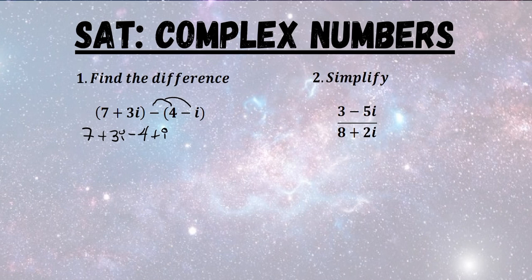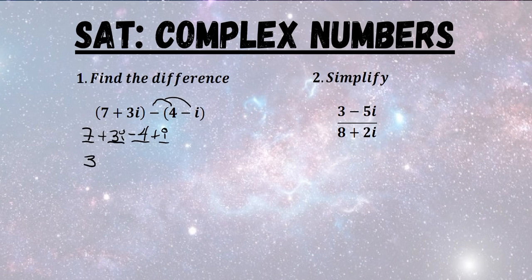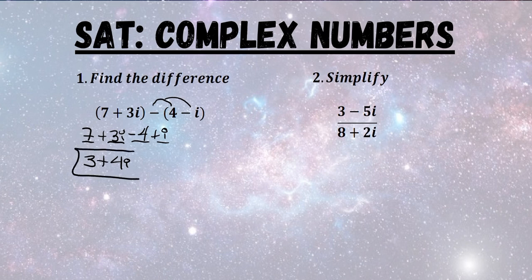Next we need to combine like terms. 7 and negative 4 go together, 7 minus 4 gives us 3, and then 3i and i also go together. 3i plus i is going to give us 4i, and that's all that we need to do for number 1.